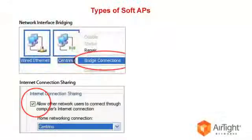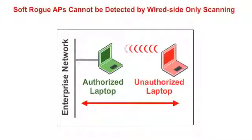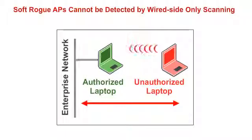Even after addressing reachability, there are still cases which are not detectable. A great example would be soft access points — where someone plugged a Wi-Fi card on a USB into an authorized laptop and bridged that connection. Now you look from the wired side, what do you see? You see the laptop's Ethernet connection as it is — it looks normal. But that laptop is actually a rogue access point on your network, and it cannot fundamentally be detected by wired-side-only techniques.